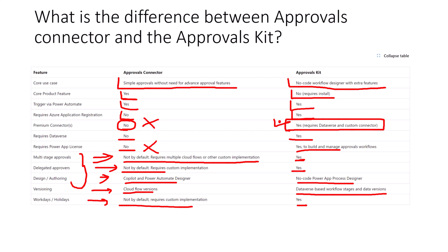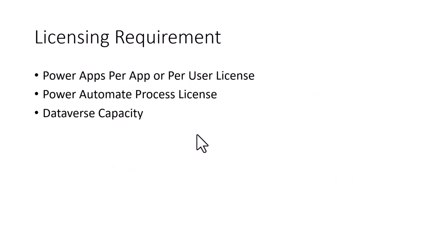The main points are licensing and the extra feature set. Now let's talk about the licensing requirements before you install this kit. You need the Power Platform admin center, along with Power Apps per-app or per-user licenses for whoever wants to use this approval workflow designer app. You also require a Power Automate Process license along with Dataverse capacity. I will share the link in the description box with the detailed licensing requirements, but these are the three major things you require before getting started with the Power Automate Approval Kit.